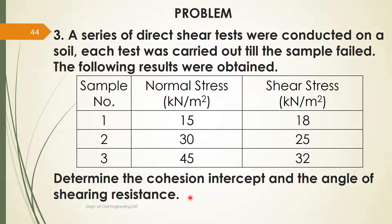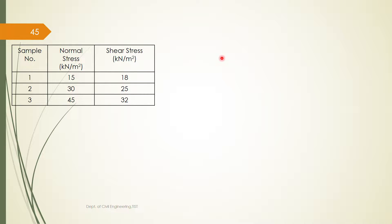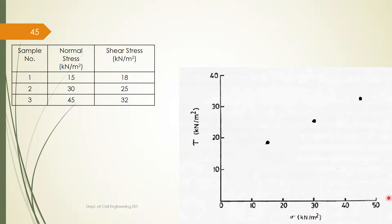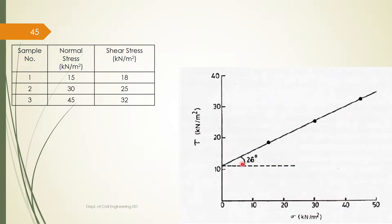For finding cohesion intercept c and angle of shearing resistance, we need to draw the failure envelope. The angle of inclination of the failure envelope with the horizontal is the angle of shearing resistance φ, and the y-intercept is your c value. From this data we will be drawing the failure envelope. We have the sigma axis, the tau axis, and we plot these three points representing failure. Drawing a straight line connecting these three points gives you the failure envelope. The inclination of this envelope with horizontal is measured using the protractor and it is obtained as 26 degrees, so this is your φ value.